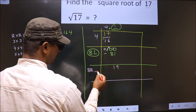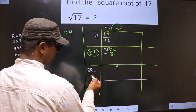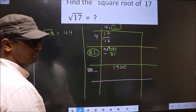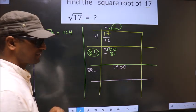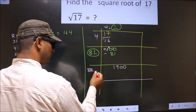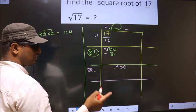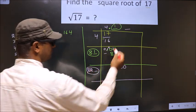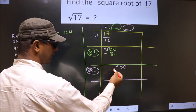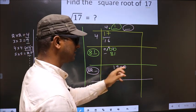Now I should write a number here, but when I write the number, this number will be smaller than this. The decimal we already have, so directly take two zeros. The condition is: whatever number I write here, I should write the same number here as well. And when you multiply this number by this number, the resulting number should be either equal to or smaller than this — but not larger than this.